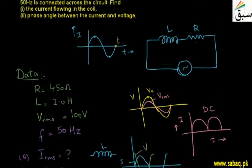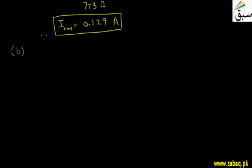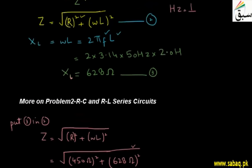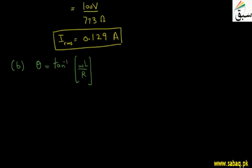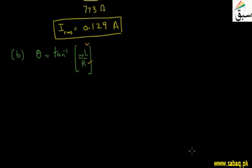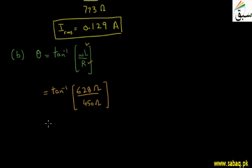The second part asks us to find the phase angle between current and voltage. The phase angle theta equals tan inverse of omega L divided by R. The value of omega L is the reactance due to inductance, which is 628 ohms, and the resistance R is 450 ohms. So theta equals tan inverse of 628 divided by 450, which gives us 54.27 degrees.